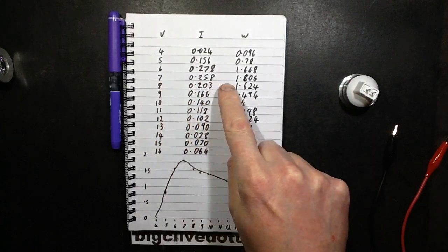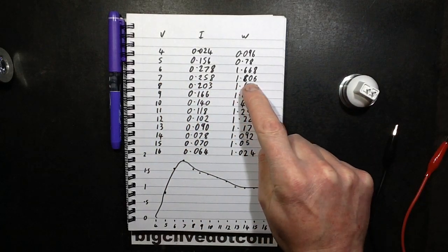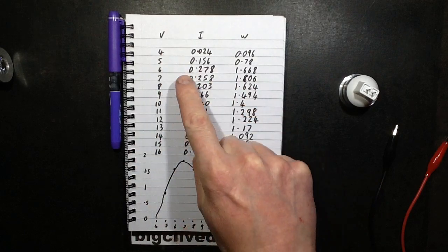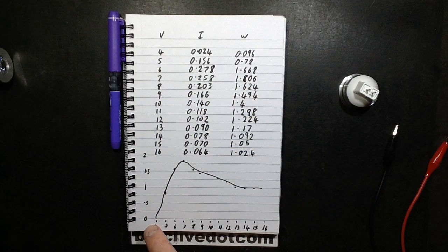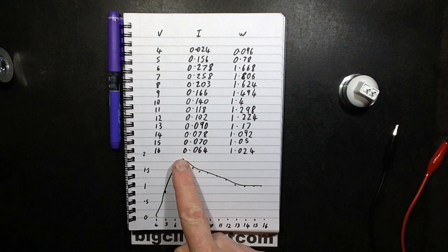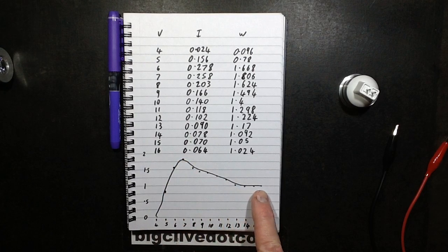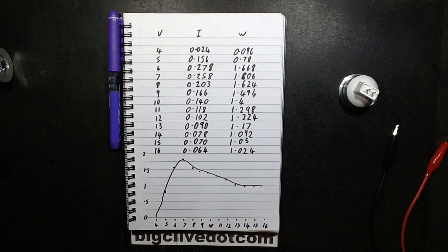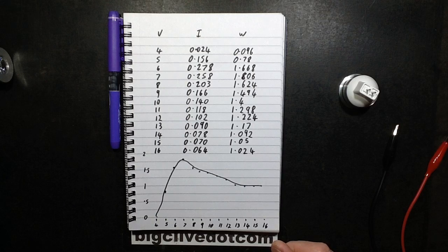Its power peaked at 1.8 watts dissipation at 7 volts. I charted it out as a graph. It climbed quite quickly, peaked early on at 7 volts, and then trailed down and sort of stabilized around about 14, 15, 16 volt mark. Very odd characteristic.